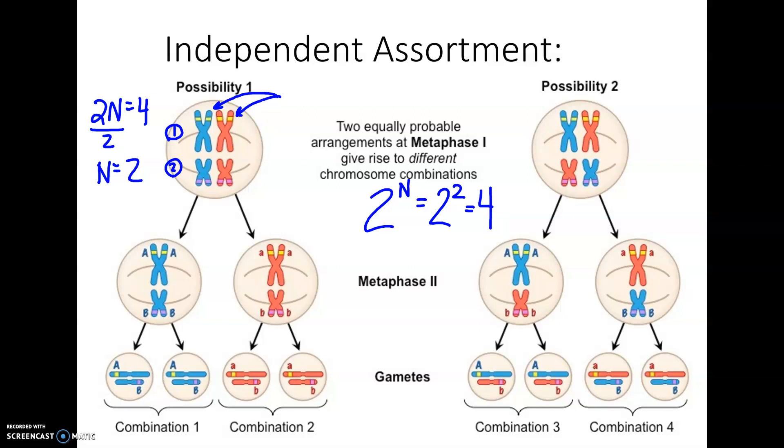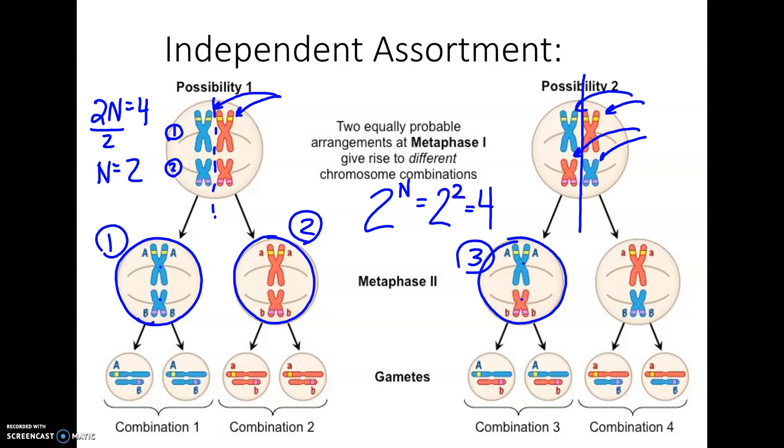And so in this case, that would be 2 squared because the haploid number is 2, and there would be 4 possible outcomes. So here are your 4 possible outcomes. So you could get one blue, both of the blue chromosomes together. That would be possibility number 1. The other possibility, if they line up this way, is possibility number 2, that you could get an egg cell that's got the two pink chromosomes.